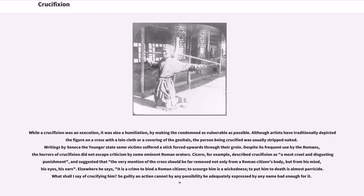Despite its frequent use by the Romans, the horrors of crucifixion did not escape criticism by some eminent Romans. Cicero described crucifixion as a most cruel and disgusting punishment, and suggested that the very mention of the cross should be far removed not only from a Roman citizen's body, but from his mind, his eyes, his ears. Elsewhere he says: 'It is a crime to bind a Roman citizen, to scourge him is a wickedness, to put him to death is almost parricide. What shall I say of crucifying him? So guilty an action cannot by any possibility be adequately expressed by any name bad enough for it.'